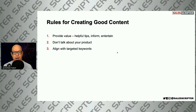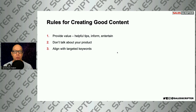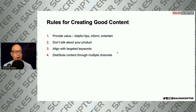The next thing is to align the content you create with targeted keywords related to your product or business. You want to create as much content as you can, but aligning it with keywords helps. As Google scans your site and realizes you're a subject matter expert in a particular area, you want them to associate your expertise with keywords related to what you sell so they can send you targeted traffic. That's basically what happened with me — I created content around sales scripts, cold call scripts, and cold calling, and then Google started sending me targeted traffic.